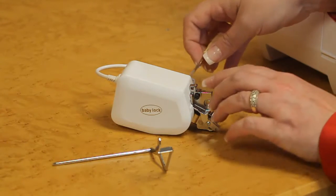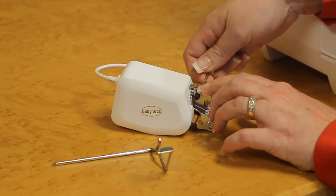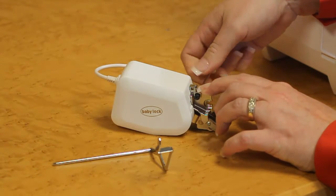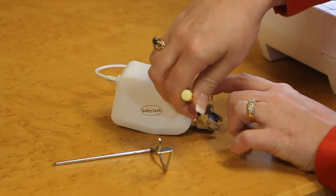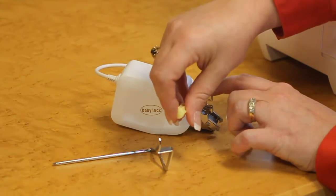Take the screwdriver that came with your machine and tighten the little screws on either side to secure the adapter to the digital dual feed foot.